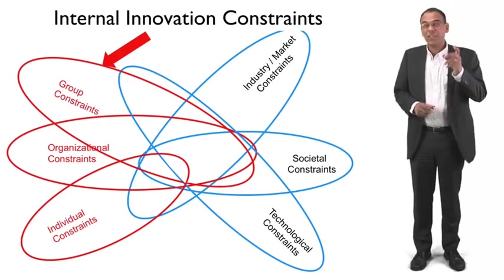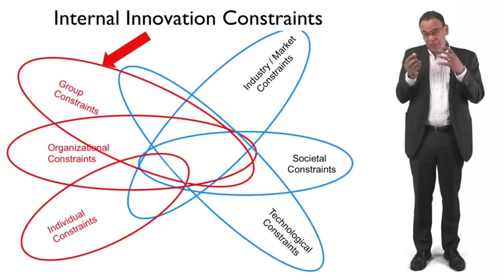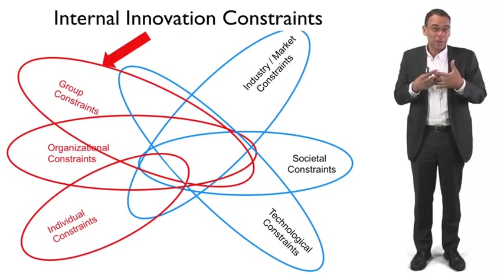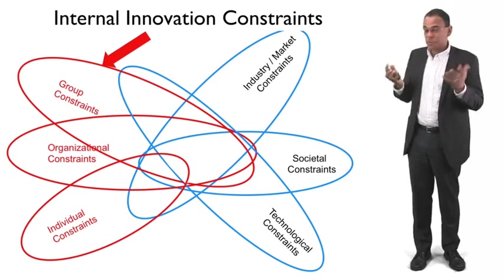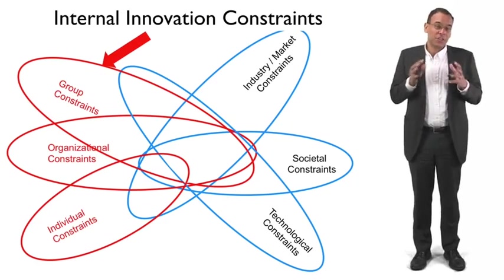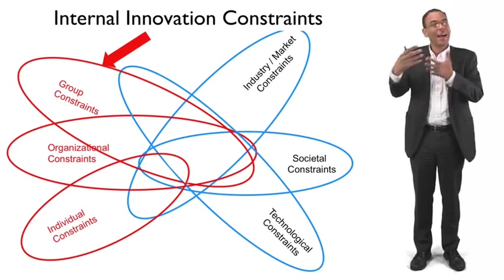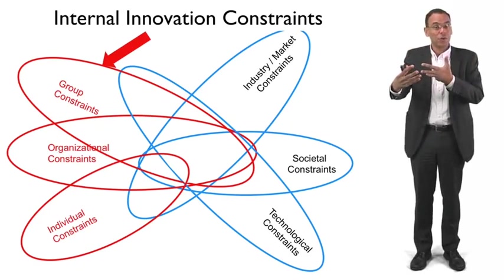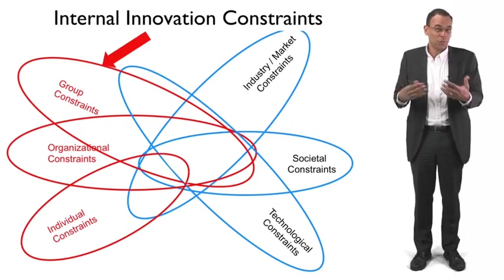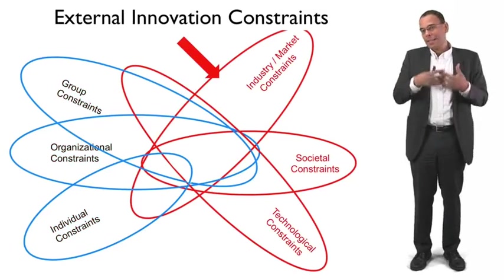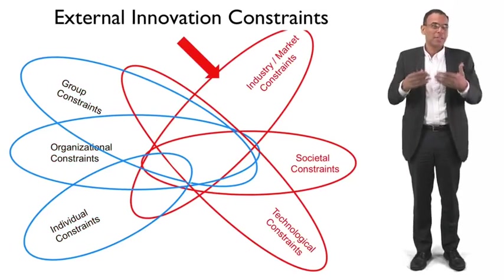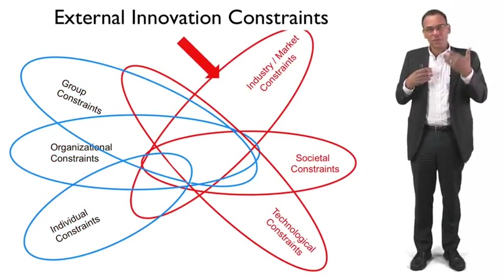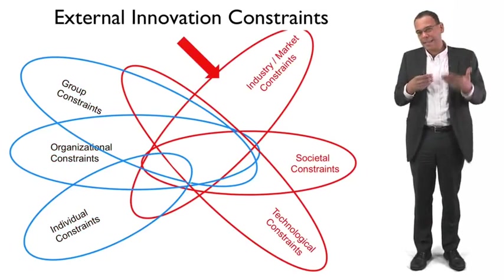Those three — individual, group, and organizational — are what I'll call the internal constraints. These are constraints we have a little more control over. What I do as an individual, how I generate ideas, the groups I work within, even organizations to a lesser extent — I have a higher locus of control and can assert more influence over these. The second set are what I'll call external constraints: industry, society, and technology.